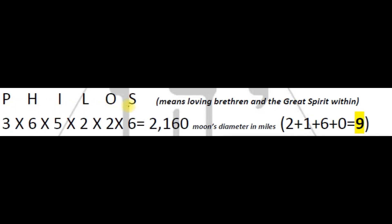Phylos, its meaning is loving brethren and the great spirit within. Phylos has a product of 2160. 2160 miles is the moon's diameter, having a digital root value of nine.